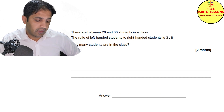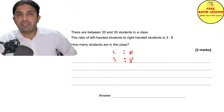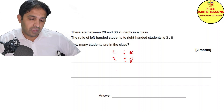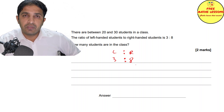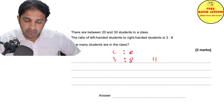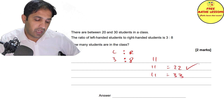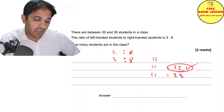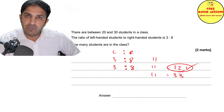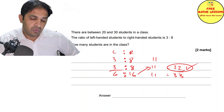Question eleven: the ratio of left-handed to right-handed students is 3:8. For every 11 students, 3 are left-handed and 8 are right-handed. We need a total between 20 and 30. One group of 11 isn't enough; two groups give 22 students. So with two lots: 6 left-handed and 16 right-handed, giving 22 students in the class.